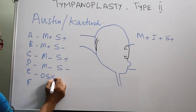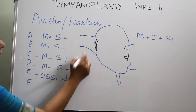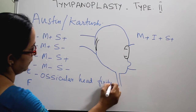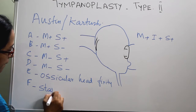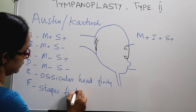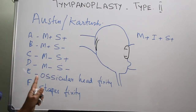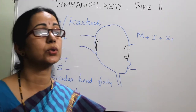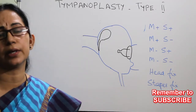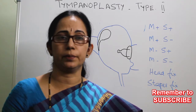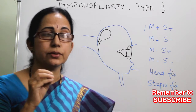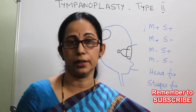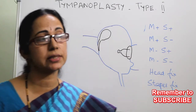Type E is ossicular head fixation — mainly the head of malleus is fixed. Type F is stapes fixity. Depending on this classification, the surgeon can decide which type of ossiculoplasty or which procedure to use, along with the surgeon's experience. In all these cases there is no ossicular coupling, so conductive hearing loss is the complaint. The aim of surgery is to improve hearing — subjective improvement and patient satisfaction.